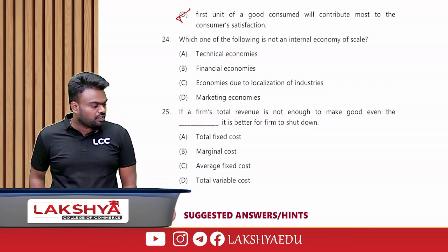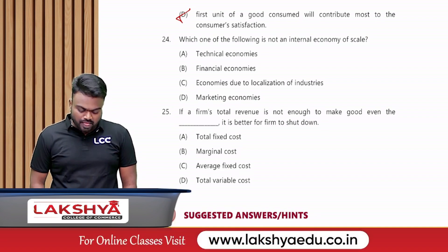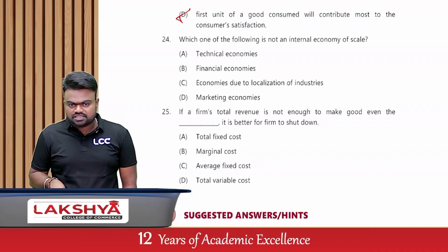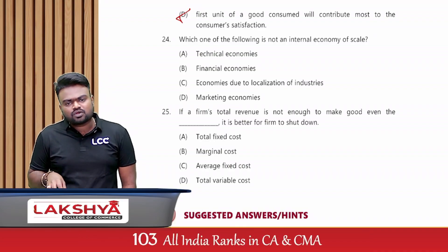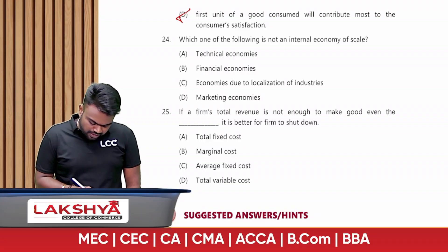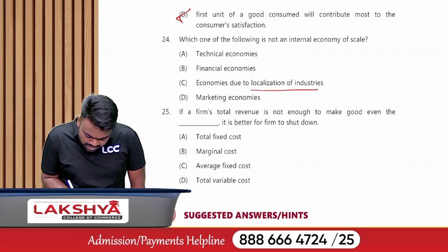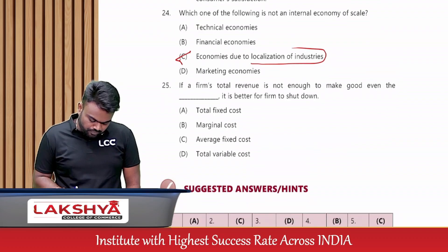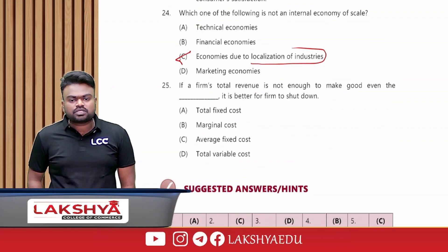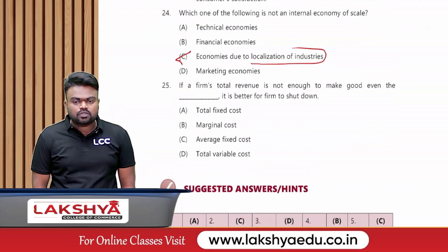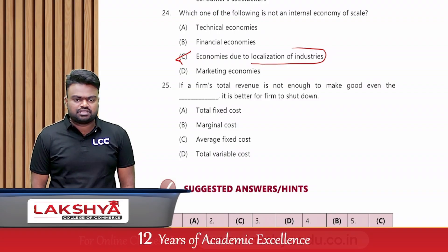Which of the following is not an internal economy of scale? The difference between internal and external economies: factors within the control of the organization are internal; factors not within the control of the organization are external. Localization of industries is an external economy, not an internal one.